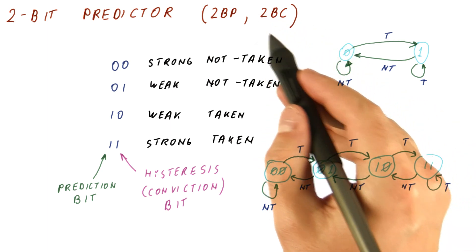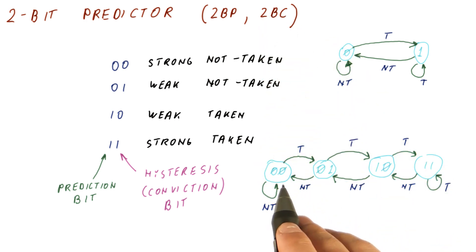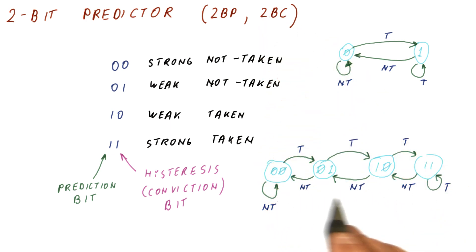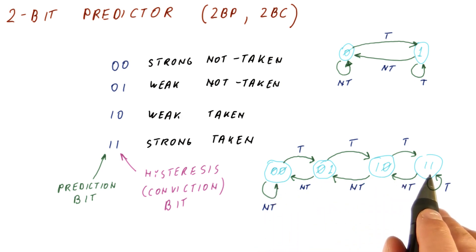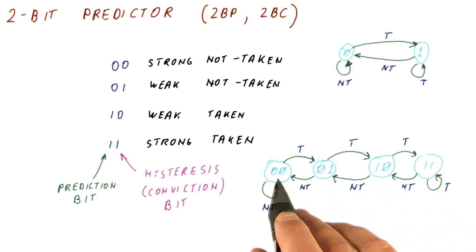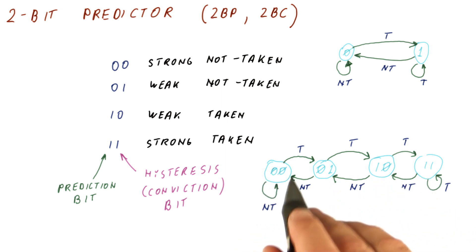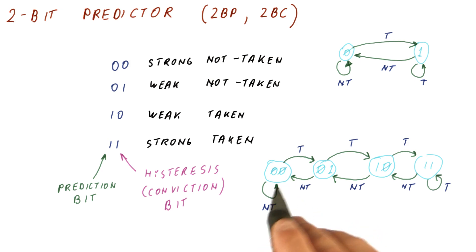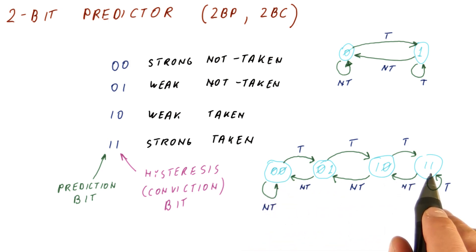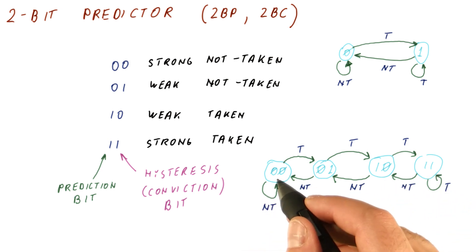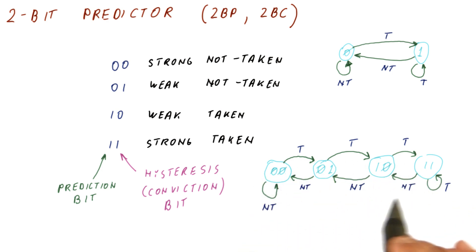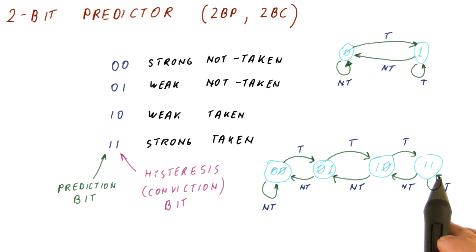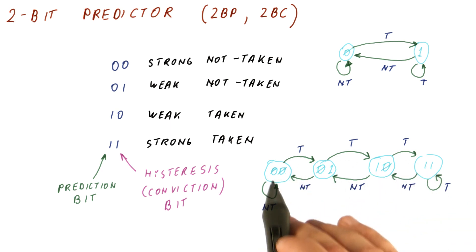The reason this is called a two-bit counter is that it counts up when the branch is taken, saturating at three, and counts down when the branch is not taken, saturating at zero. This is a two-bit saturating counter, and this also means the predictor is relatively easy to implement in hardware.